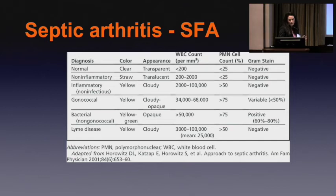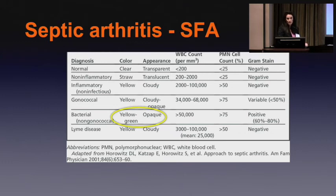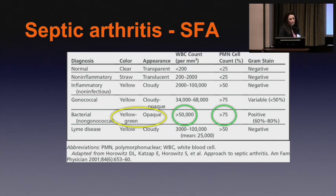What's sometimes overlooked but very helpful to me is just what does the fluid look like. I love it when the ER takes a picture and sends it to me — if it's milky stuff, I'm canceling my plans and getting ready to go to the OR. Then the cell count comes back over 50,000 with a predominance of white cells. The gram stain — we always get it, it's a nice confidence boost if it's positive, but oftentimes it's not very useful.